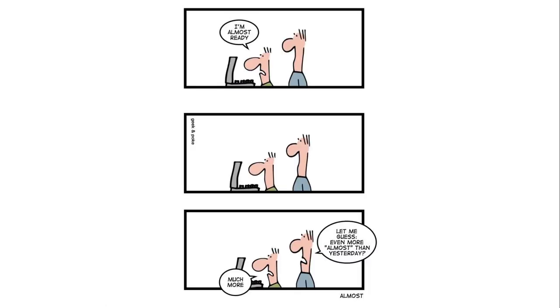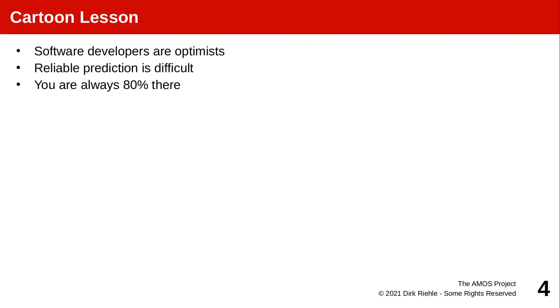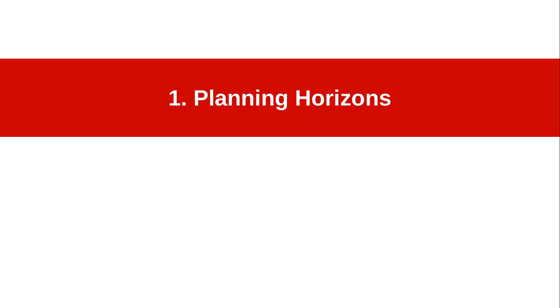Planning is hard. Here's a software developer saying 'I'm almost ready.' 'Let me guess — even more almost than yesterday?' 'Much more.' Planning is still hard, agile or not. Software developers always believe they're 80% there. If a change is always 80% there, of course you want to be there 100% at some point in time.